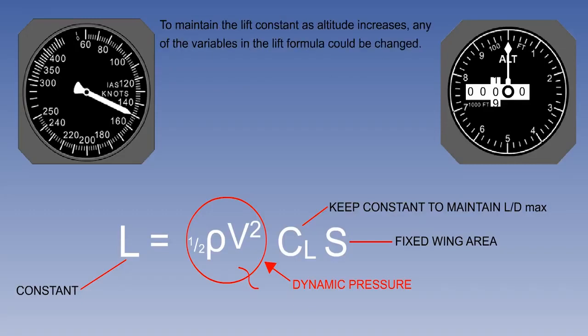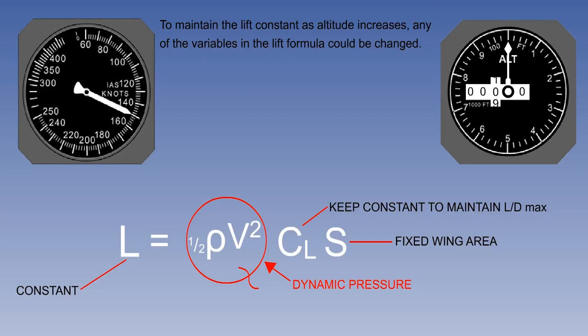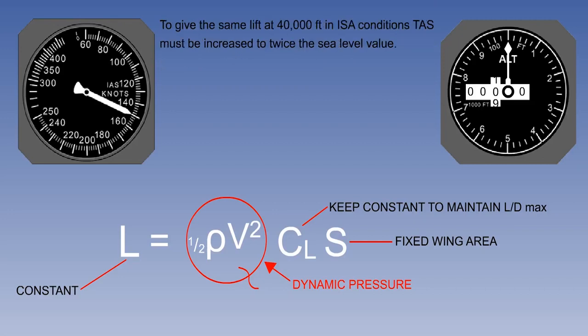To maintain constant lift as density decreases, any of the elements of the equation could be changed. But it is impractical to change wing area and inefficient to change C_L from the best lift-drag ratio at 4 degrees angle of attack. So, since the dynamic pressure must be maintained, if one element drops, the density, the other, the TAS, must rise, in this case to twice the sea level value.